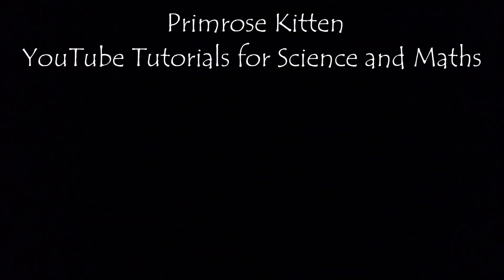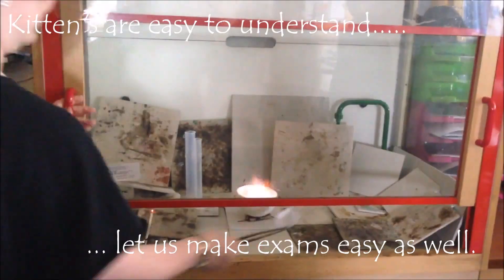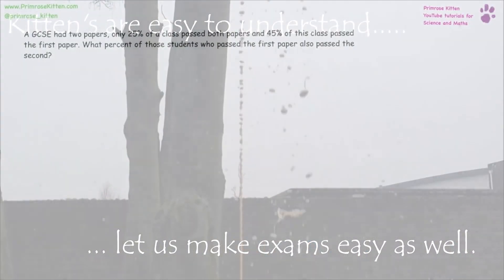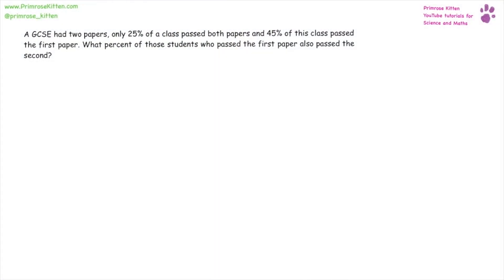Conditional probability is tricky, but not once you know how to do it. A GCSE had two exam papers. Only 25% of the class passed both papers, and 45% of the class passed the first paper. What percentage of students who passed the first paper also passed the second paper?